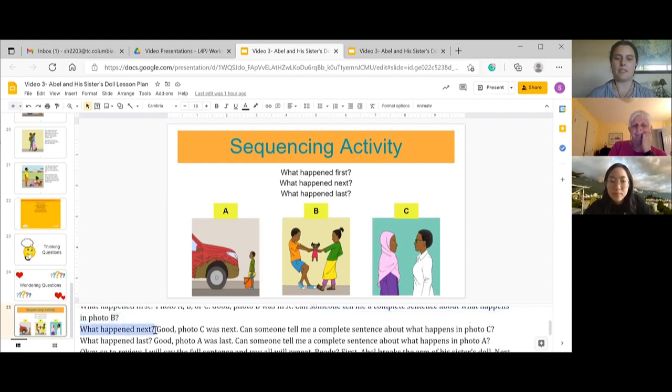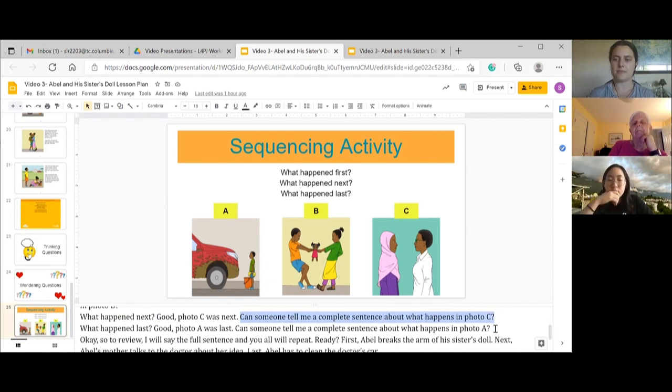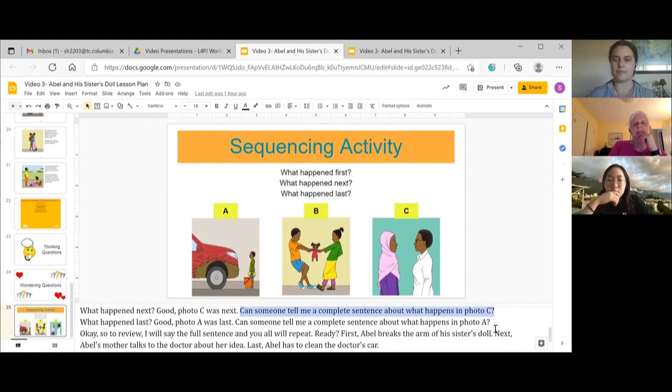And what happens next? Photo C. Good, photo C was next. And Sally or someone else, can you tell me a complete sentence about what happens in photo C? Mom has a bright idea to get help to teach Abel a lesson. Good. So next, mom has a bright idea to get help and teach Abel a lesson.